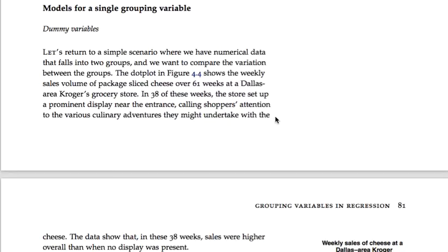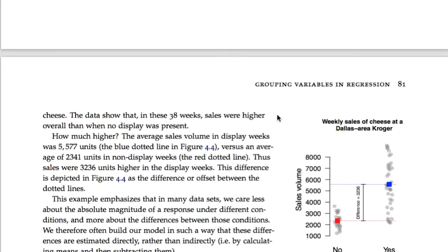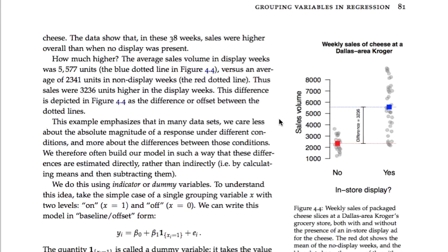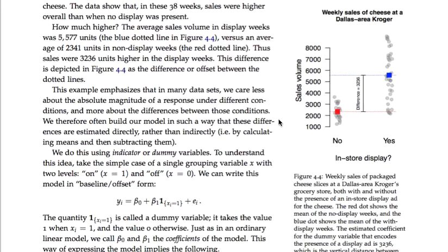Here's a simple motivating example so we can understand what dummy variables are about and what they are used for. This data set on the right-hand side of your screen shows two dot plots representing weekly sales of packaged sliced American cheese at a Dallas-area Kroger's grocery store. The two categories represent the answer to a simple question: yes or no, was there an in-store advertising display for cheese that week? Every dot is a week.